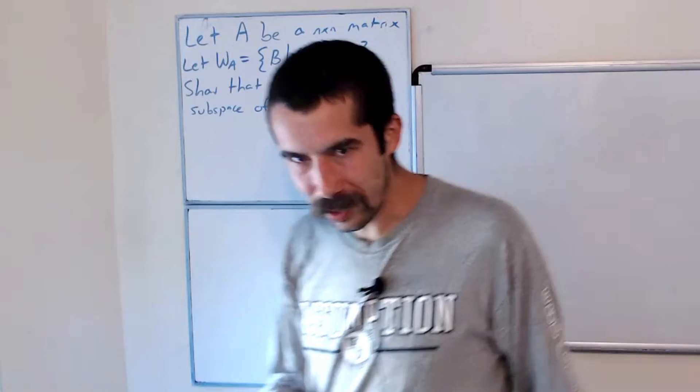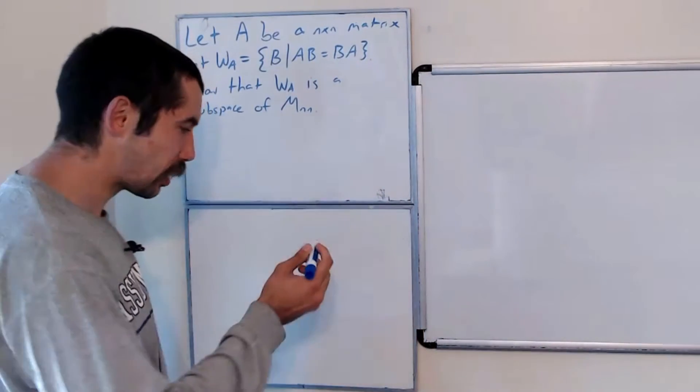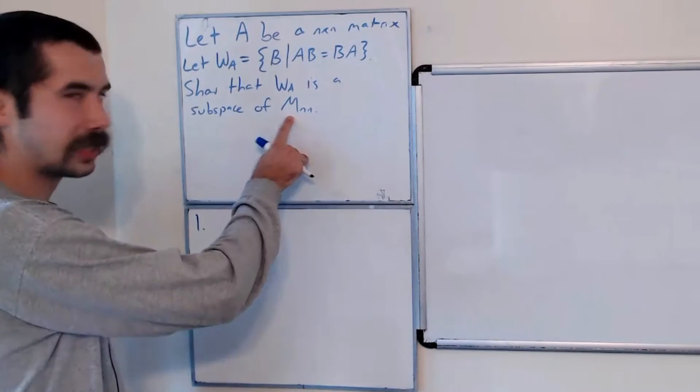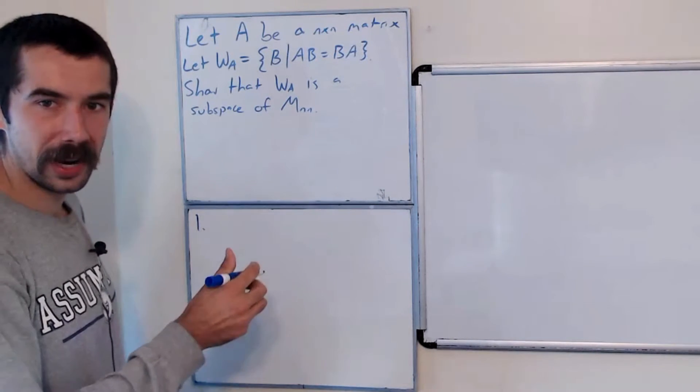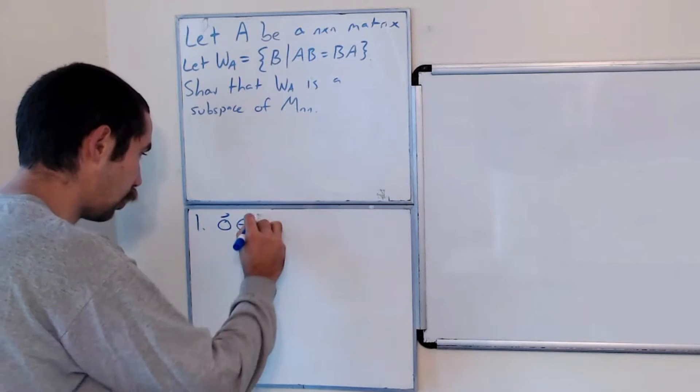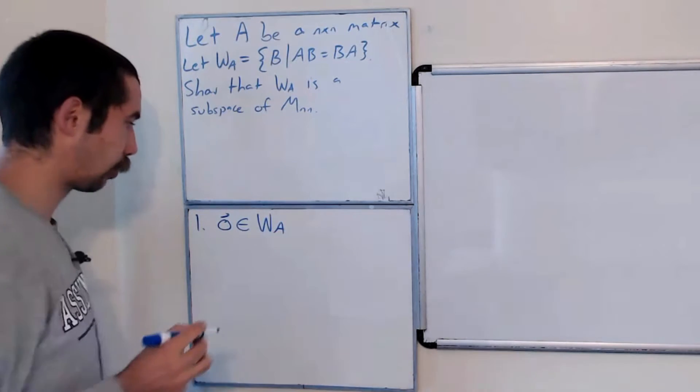So how do we show something is a subspace? We need to show that these three properties hold. We need to show that one, the zero vector of M_nn is in W sub A.